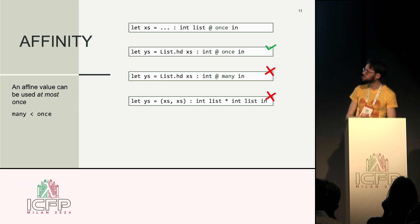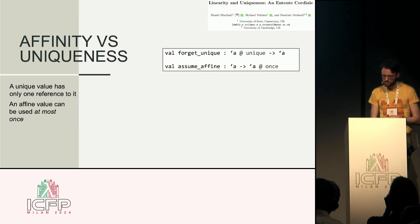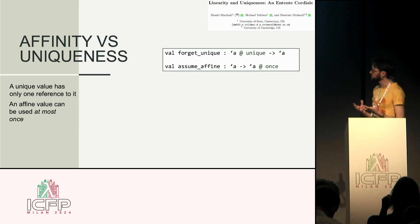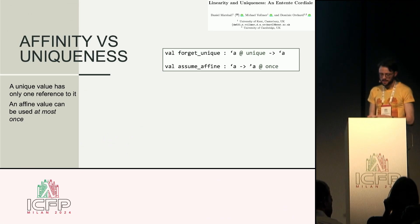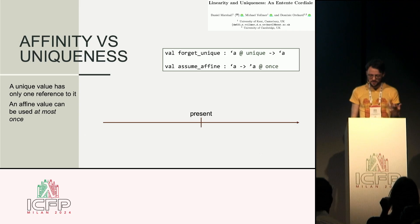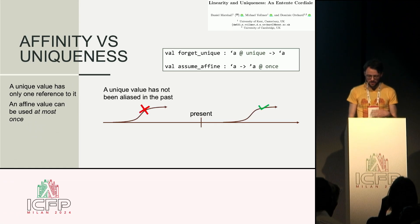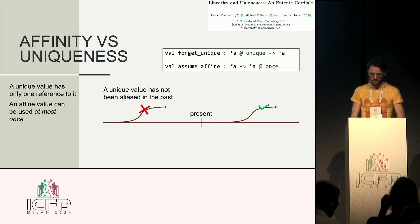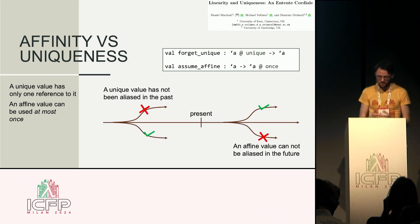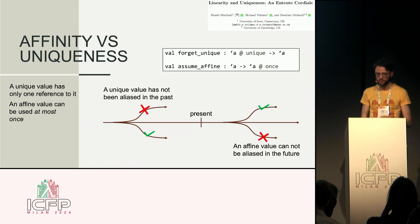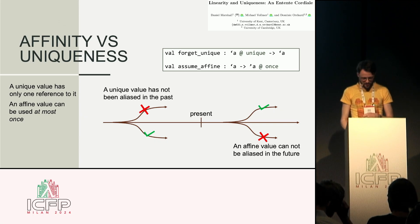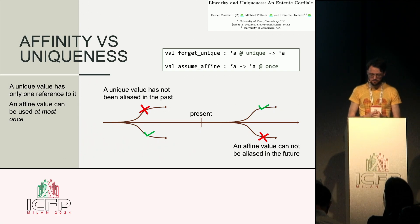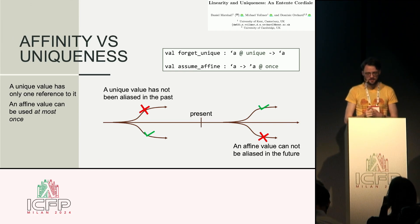Affinity and uniqueness seem related, and there's a very nice way to relate them. Uniqueness is a permission you have: you know the value has only one reference, and this is a property you can forget. An affine value, by contrast, is a restriction you can assume but cannot weaken. A unique value has not been aliased in the past, but there's no restriction on future use — it might end up used more than once later. An affine value may have had aliases in the past, but you're no longer allowed to create new aliases in the future. So they are nicely dual to each other.